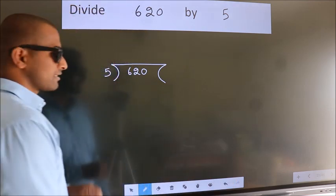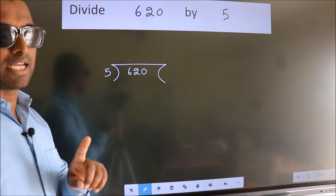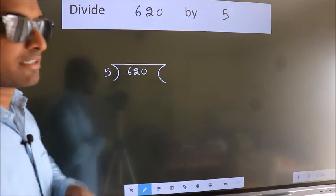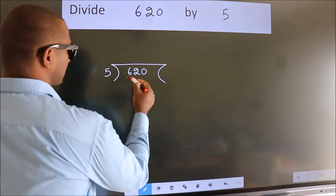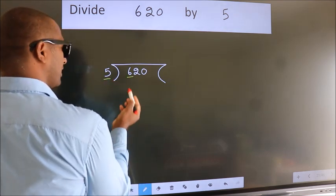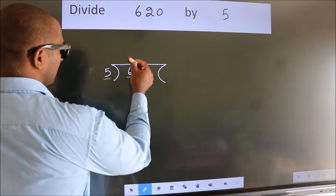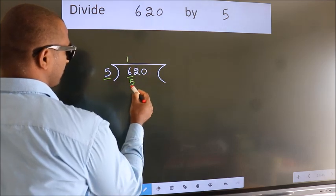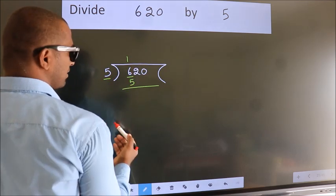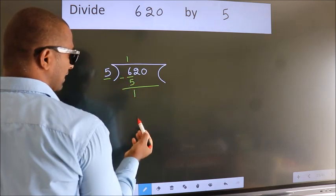This is your step 1. Here we have 6, here 5. A number close to 6 in 5 table is 5 once 5. Now we should subtract. We get 1.